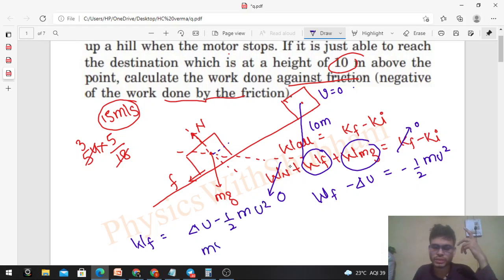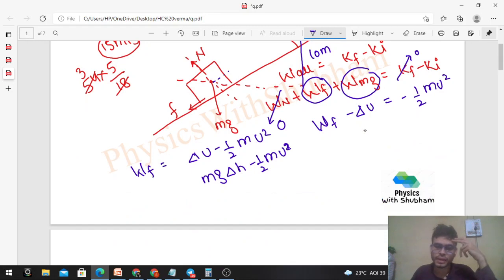mg delta h minus half of m into u squared. Now you know everything. Mass is given: 1400 kilograms. g you can take as 9.81. What is delta h?